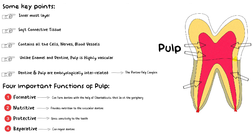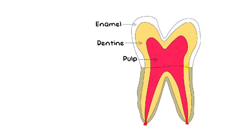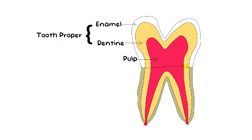These four functions of the pulp are very important and are often asked in viva or exams. The three tissues — enamel, dentine, and pulp — form the majority of the tooth. Out of these, enamel and dentine are considered under the term 'tooth proper' because both are hard tissues, while the pulp is a soft connective tissue. Therefore, the term 'tooth proper' contains only two structures: dentine and enamel, not the pulp.